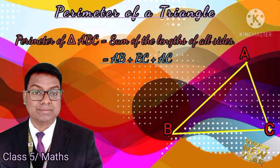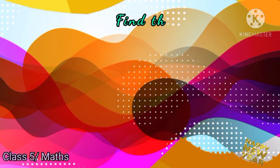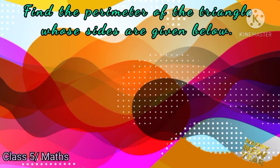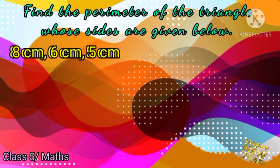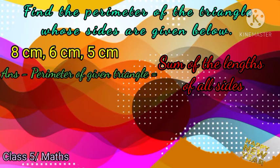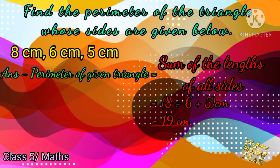Find the perimeter of a triangle whose sides are 8 cm, 6 cm, and 5 cm. Perimeter of the given triangle is equal to the sum of the length of all sides: 8 plus 6 plus 5 cm equals 19 cm. Just add all three sides of the triangle to find the perimeter.